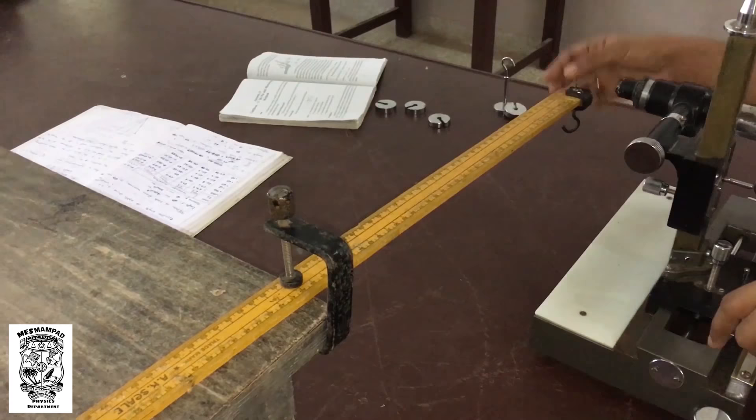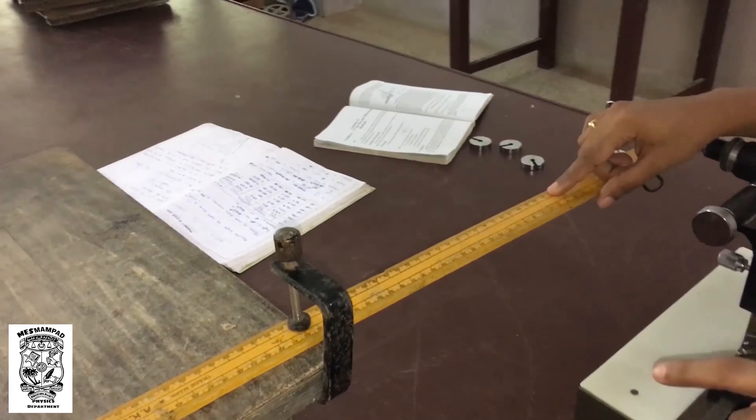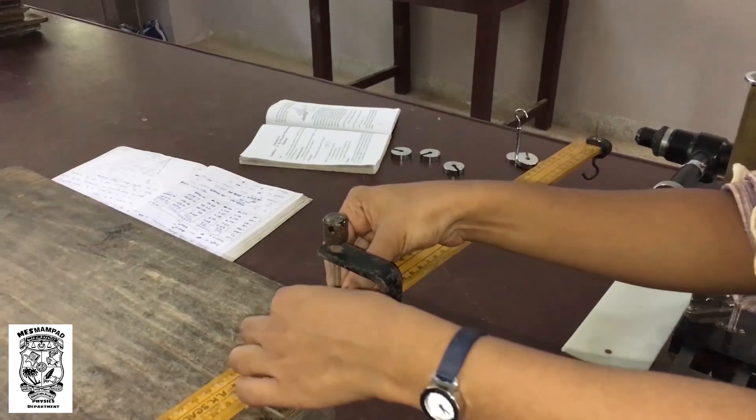Now, this bar's Young's modulus will be measured. So, our experiment uses a length of the bar of 40 centimeters. For our beam, 40 centimeters we have fixed the scale.